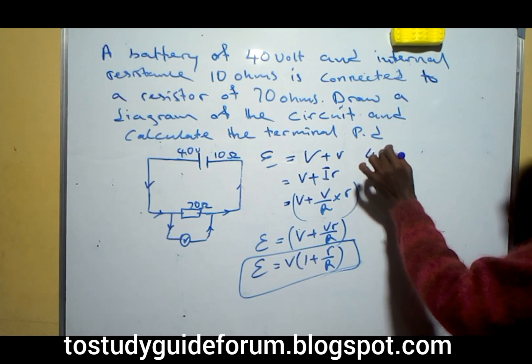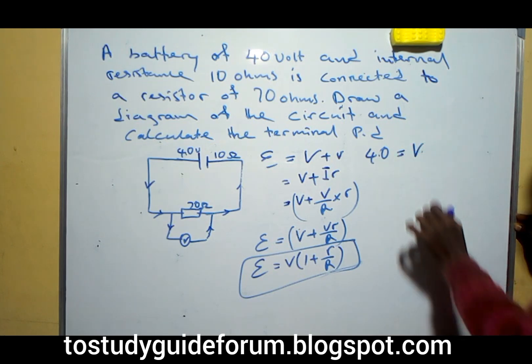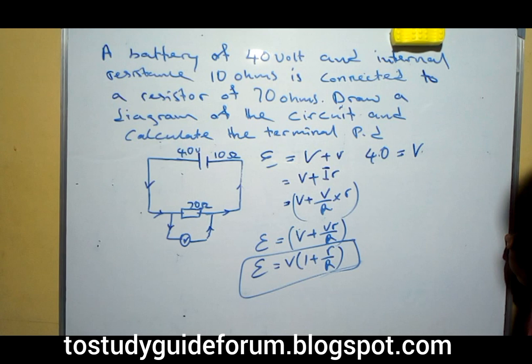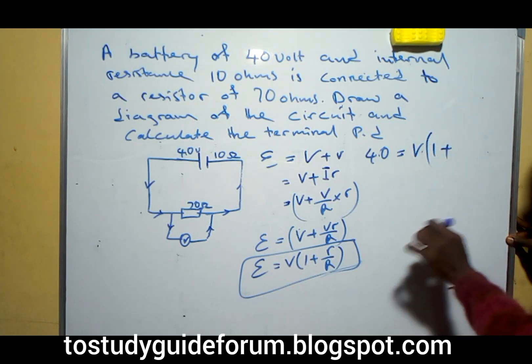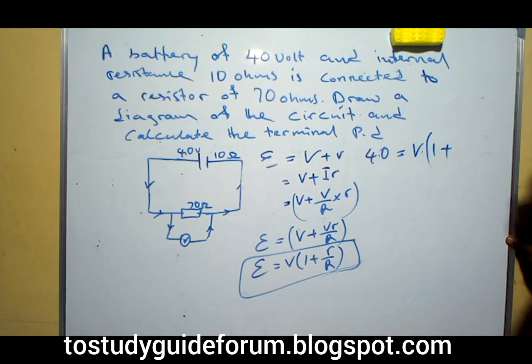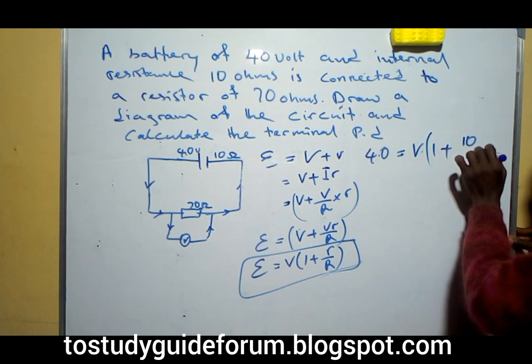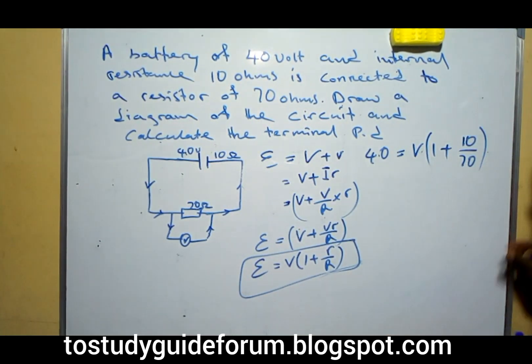Now we have our EMF. The total EMF we have there is 40, and then our volts, we don't know, that is the potential difference, the terminal potential difference, we don't know it, then we put a bracket, 1 plus our internal resistance, which is 10, and the terminal resistance was 70, all in brackets.